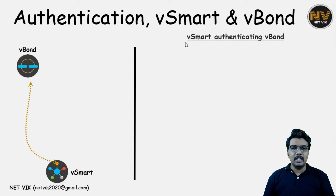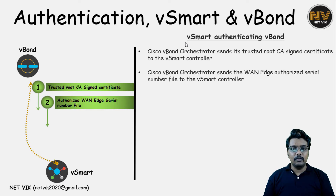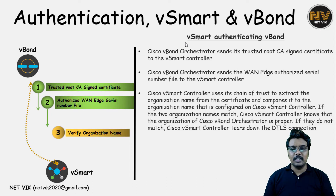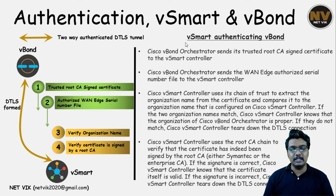Moving on, let's see how vSmart authenticates vBond. vBond sends its signed certificate, and as an additional step, vBond also sends the vManage serial file list, which contains the valid edge routers that can be onboarded onto the network. vSmart will then check the organization name and the signed certificate. When authentication is successful in both directions, a dateless tunnel will be formed between vSmart and vBond.